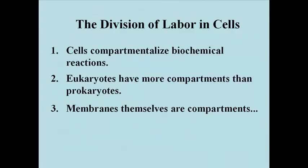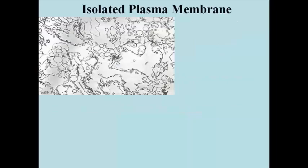Clearly, eukaryotic cells have more spaces and places to compartmentalize different chemical reactions. Even membranes themselves, like the plasma membrane, can be a separate and distinct compartment, performing chemical reactions not found elsewhere in the cell.